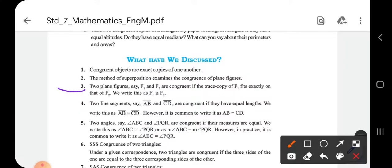Two figures are said to be congruent when they are exact copies of each other. Two line segments are said to be congruent if they have equal length.